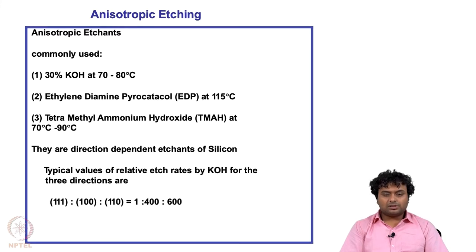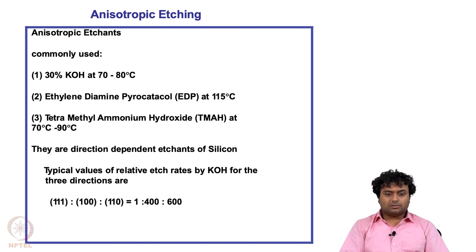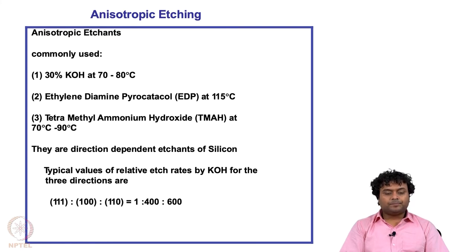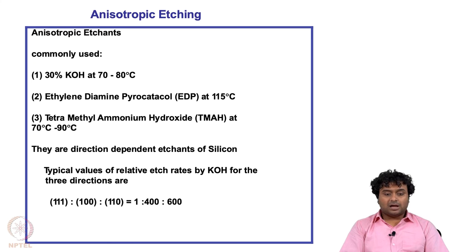Today we will start from anisotropic etching. In the last class we talked about isotropic etching, where material was etched at the same rate in all directions. Now we will see how the directionality of the crystal arrangement of silicon has an effect on its etching.